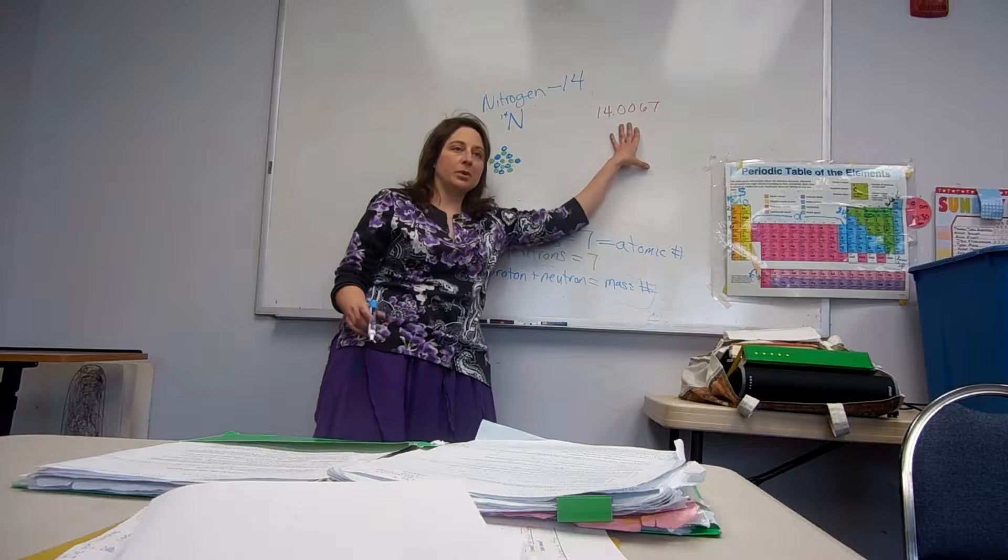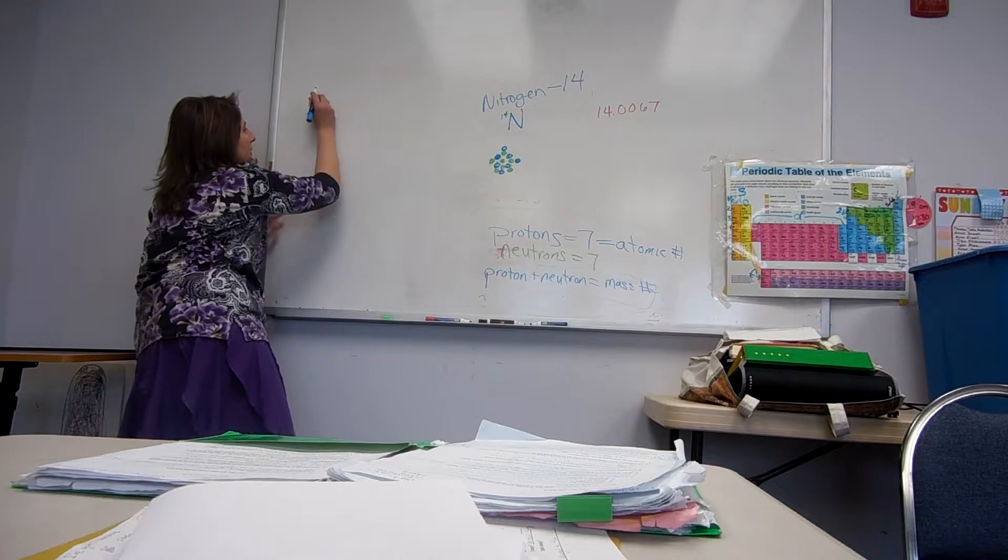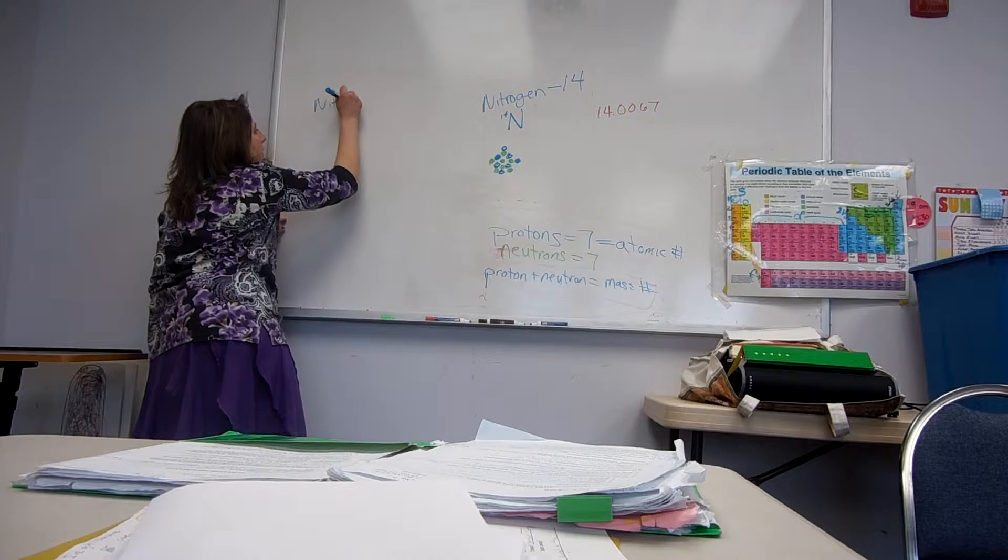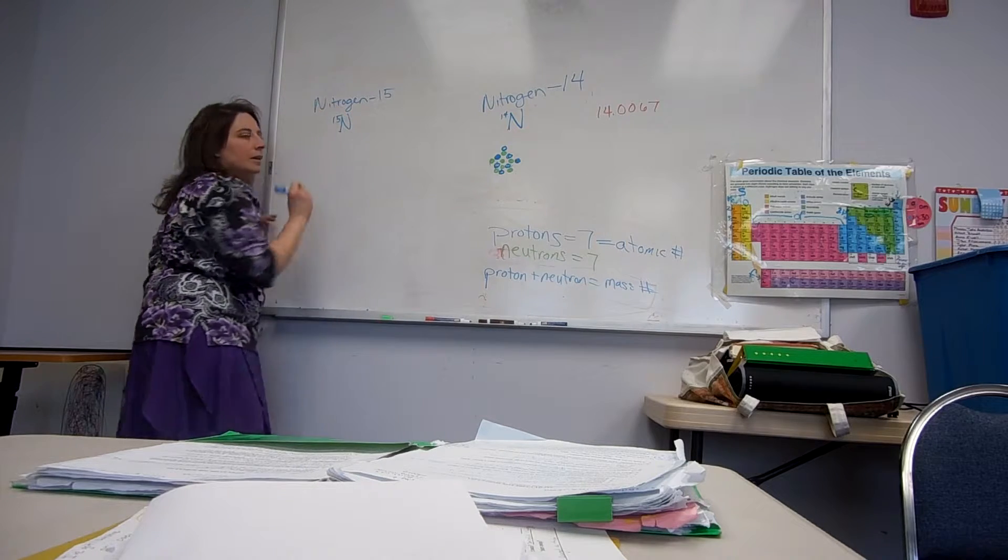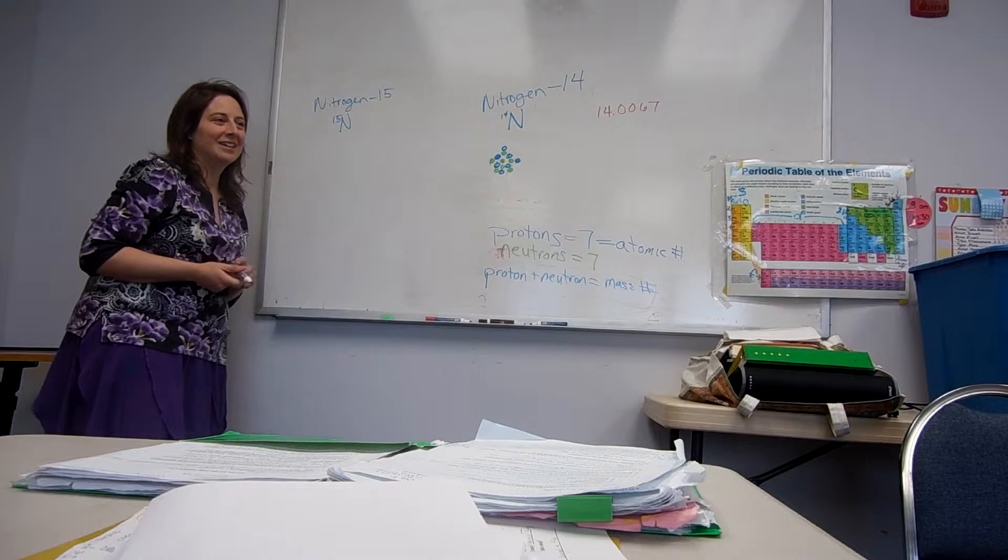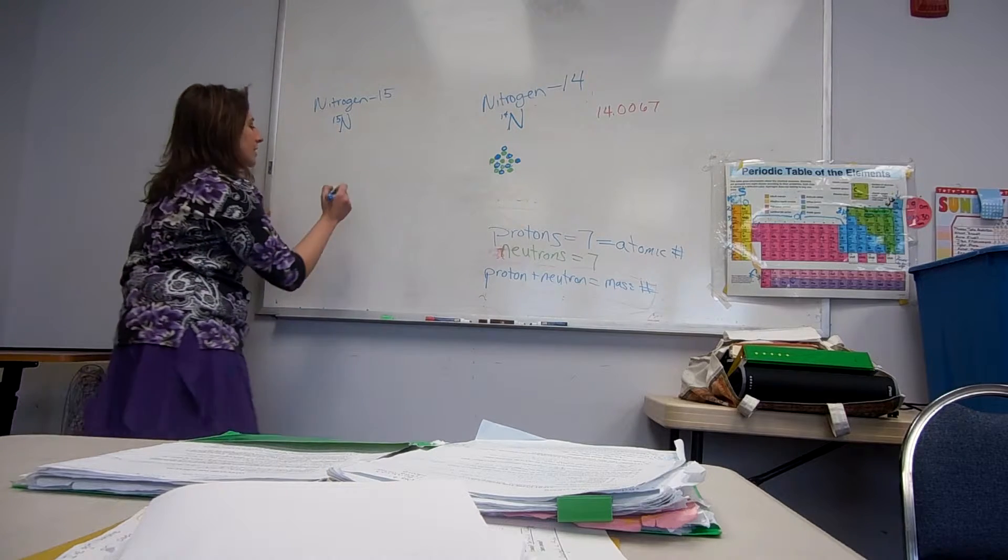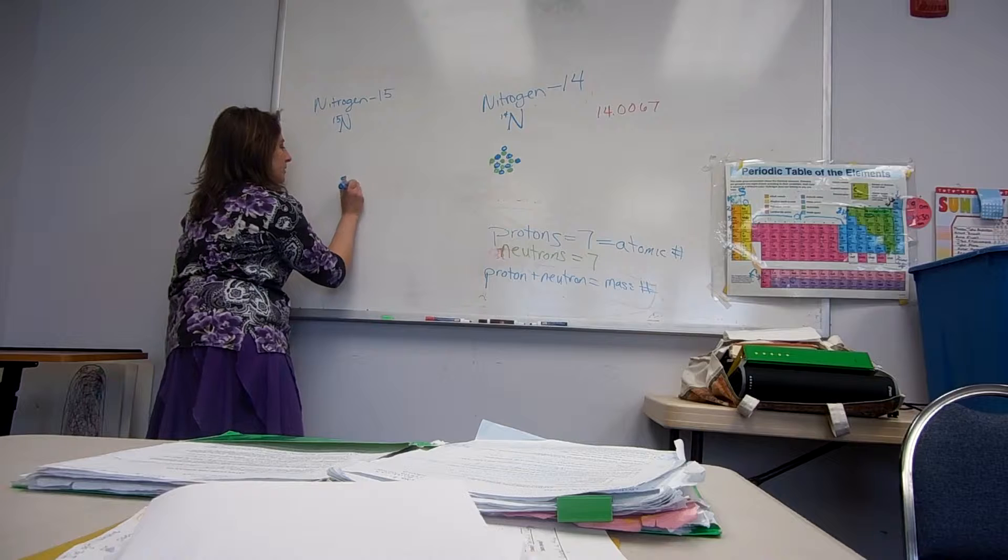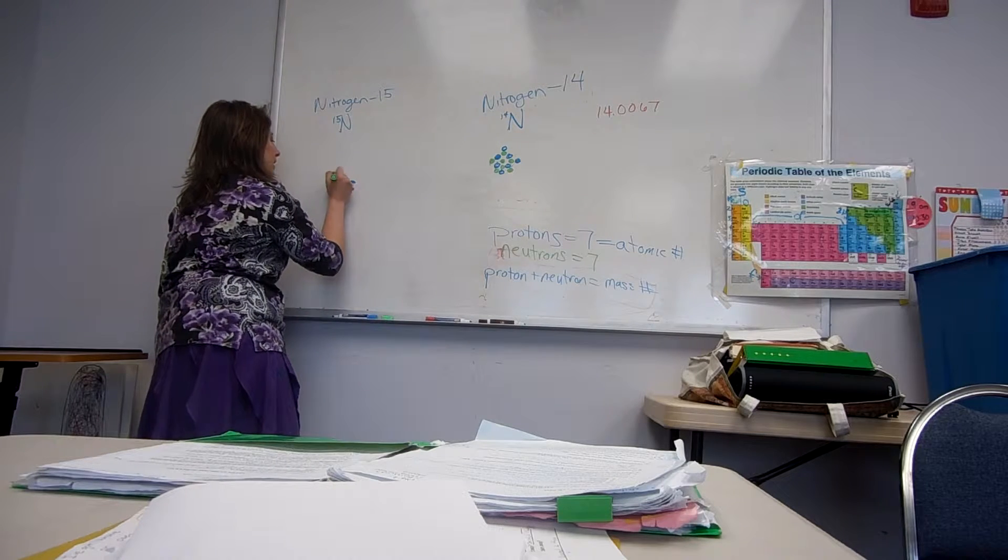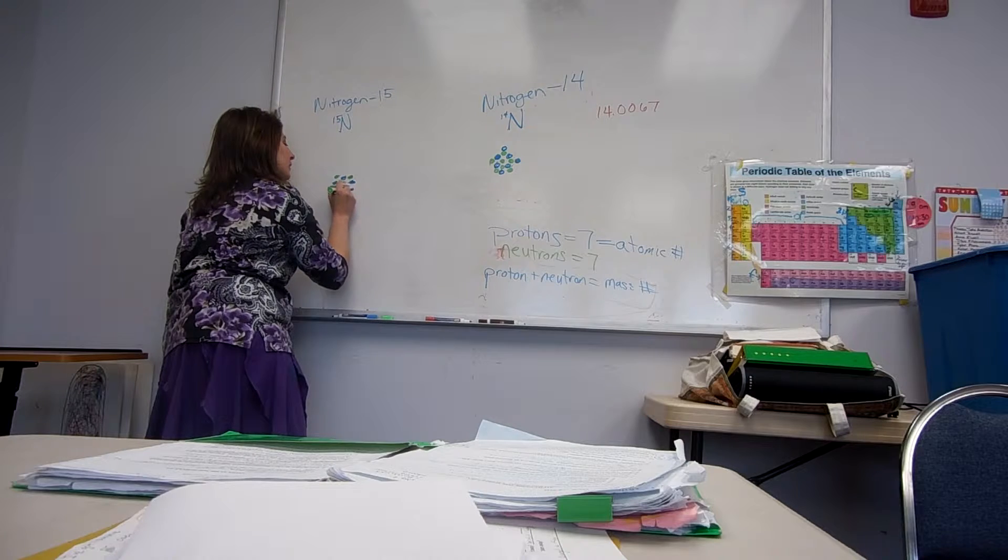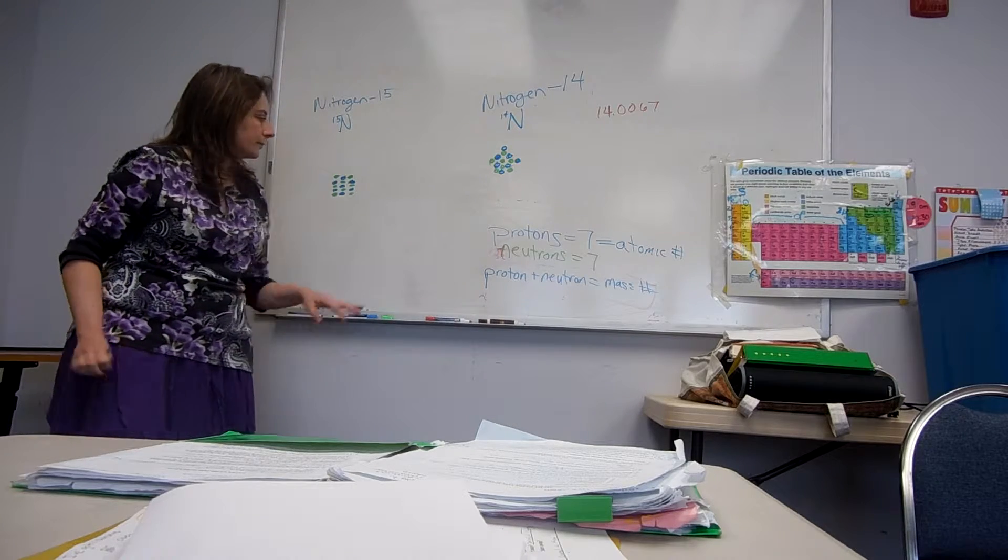Now, what do you think the other isotope would be? It's a shame. Nitrogen 15. Because we have to account for that number being a little bigger than 15. So, nitrogen 15 is the other isotope. It's going to have what difference? Anybody want to talk to me, Jenna?